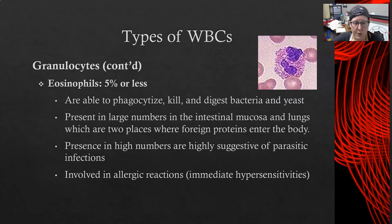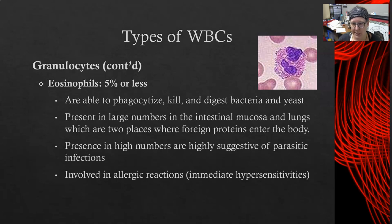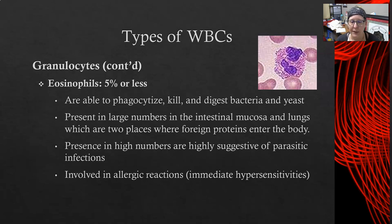The next granulocyte is the eosinophil. We expect only about five percent or less of white cells in circulation to be eosinophils. They can phagocytize, kill, and digest bacteria and yeast, and are present in large numbers in the intestinal mucosa and lungs — the two main entry points for foreign proteins. High numbers of eosinophils are highly suggestive of parasitic infections and are also involved in allergic reactions, especially immediate hypersensitivities such as bee sting reactions occurring within 30 minutes.